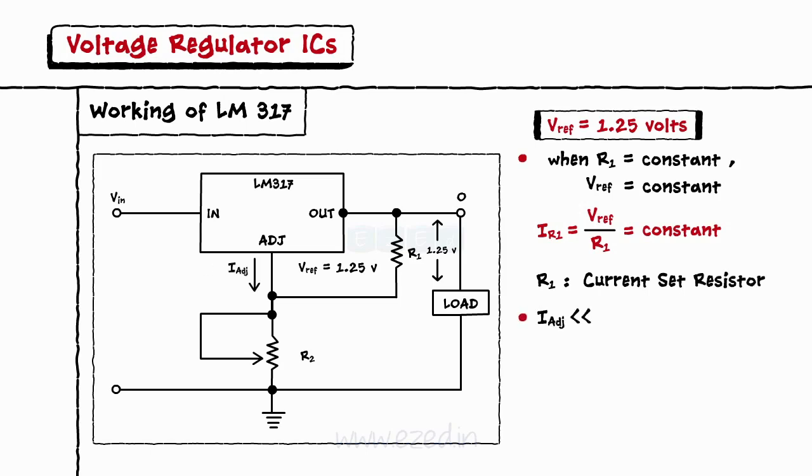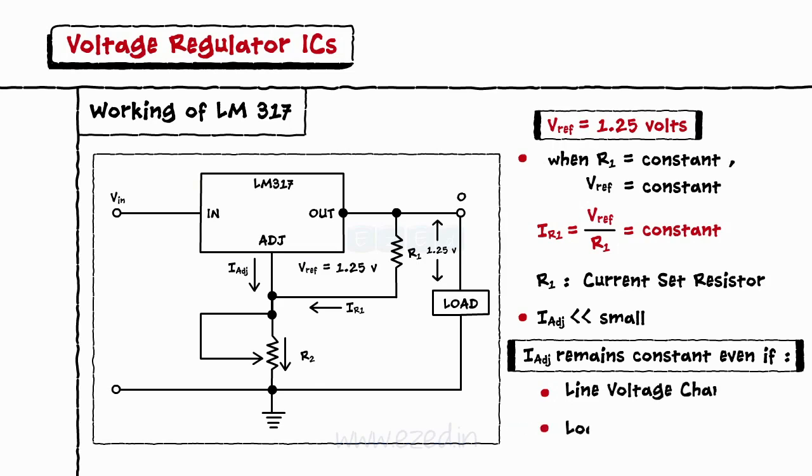Current I adjust flows from the adjust terminal. This current along with current IR1 flows through the resistance R2. The design of LM317 is such that the current I adjust is very small and remains constant even though the line voltage and load changes.